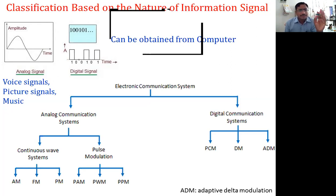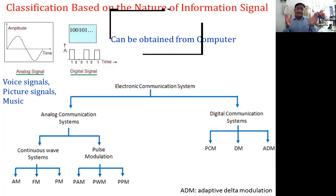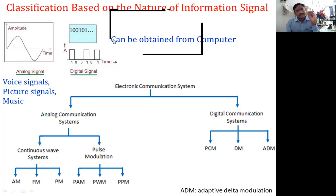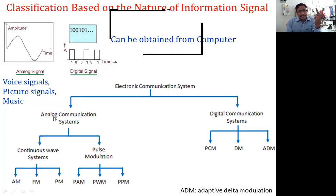Analog signal is the signal which varies continuously with time. Examples of analog signals are voice signals, picture signals, and music. A digital signal is the signal which varies discretely over time — you can have a sequence of highs and lows, ones and zeros, generated from a computer. Based on whether the signal is analog or digital, you have an analog or digital communication system.